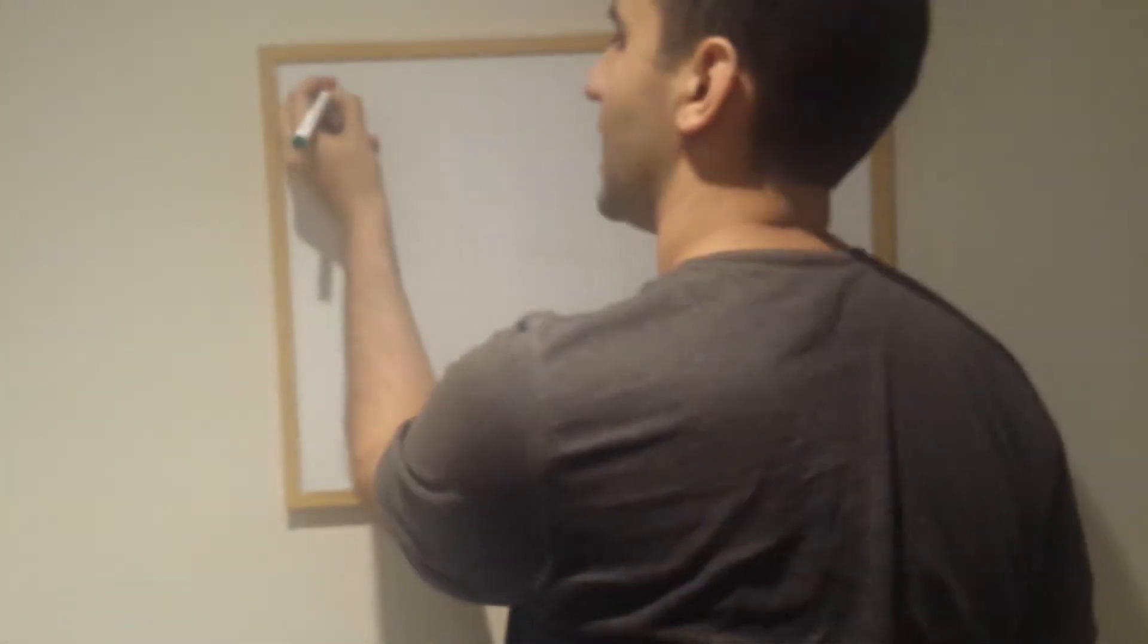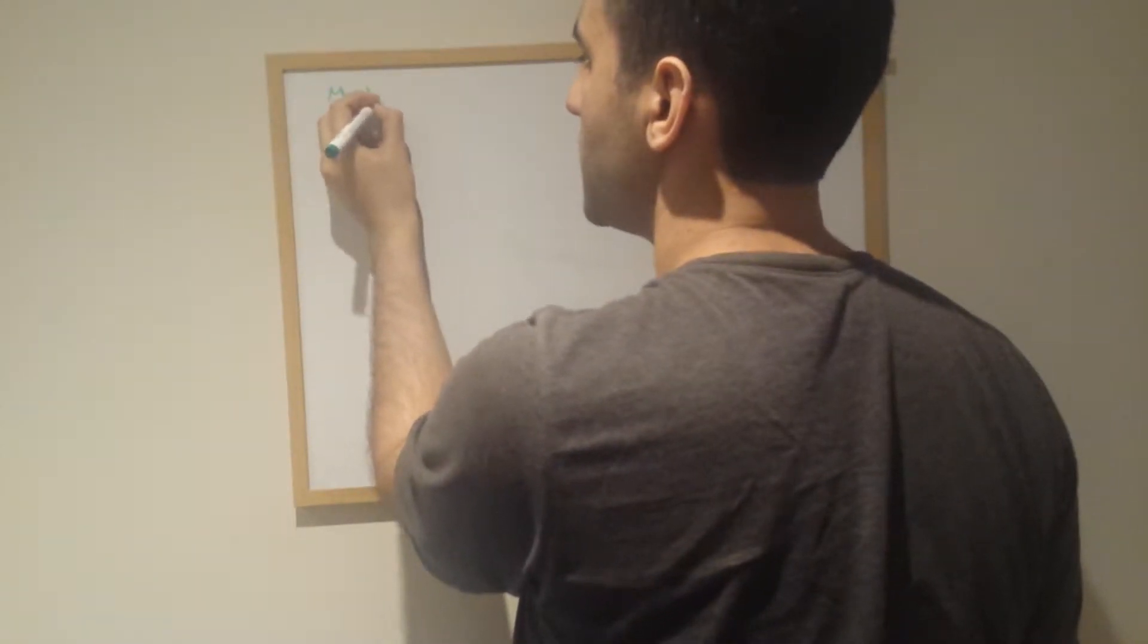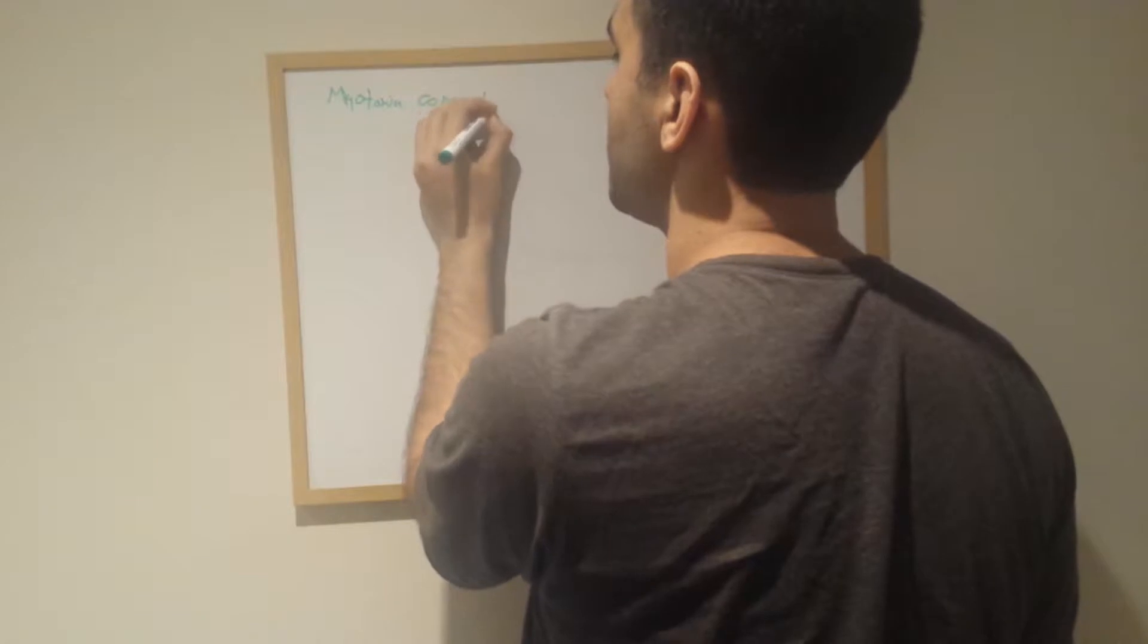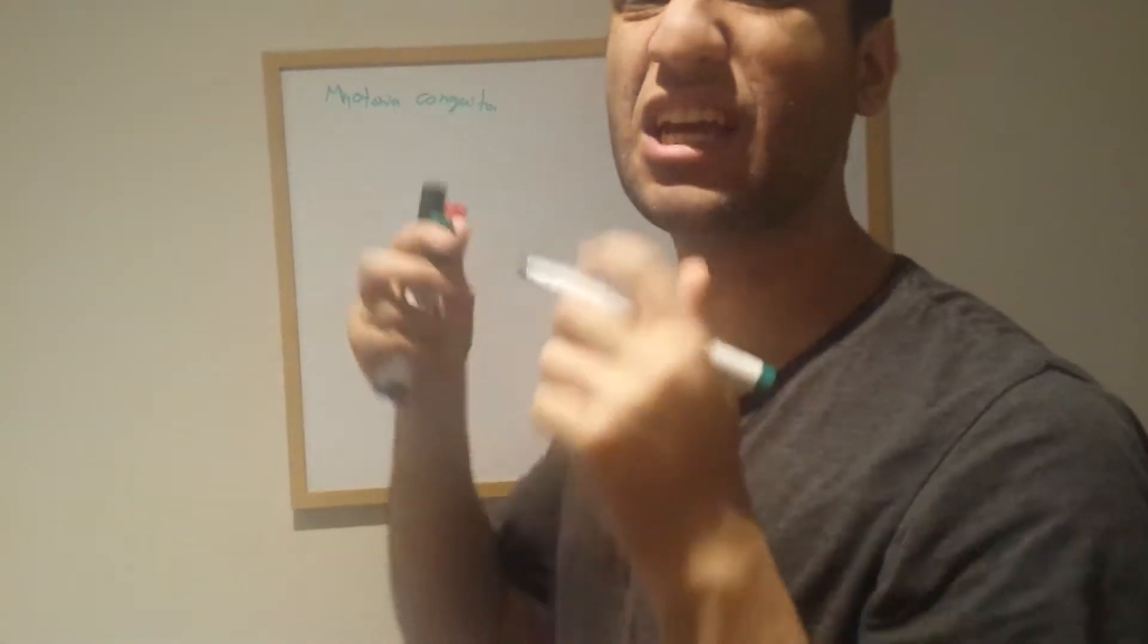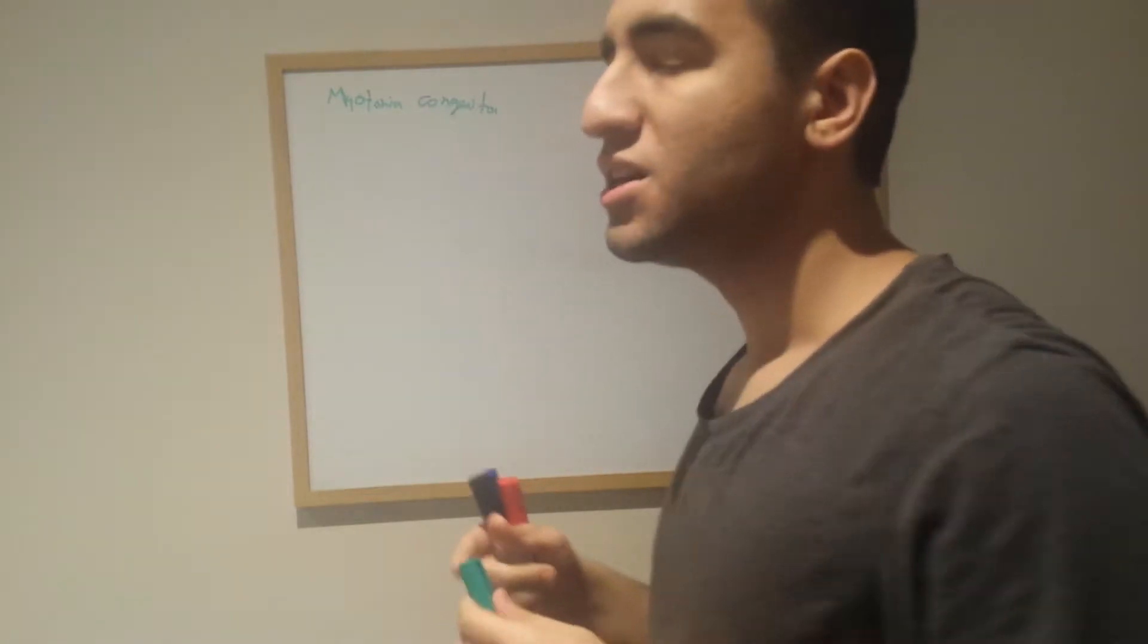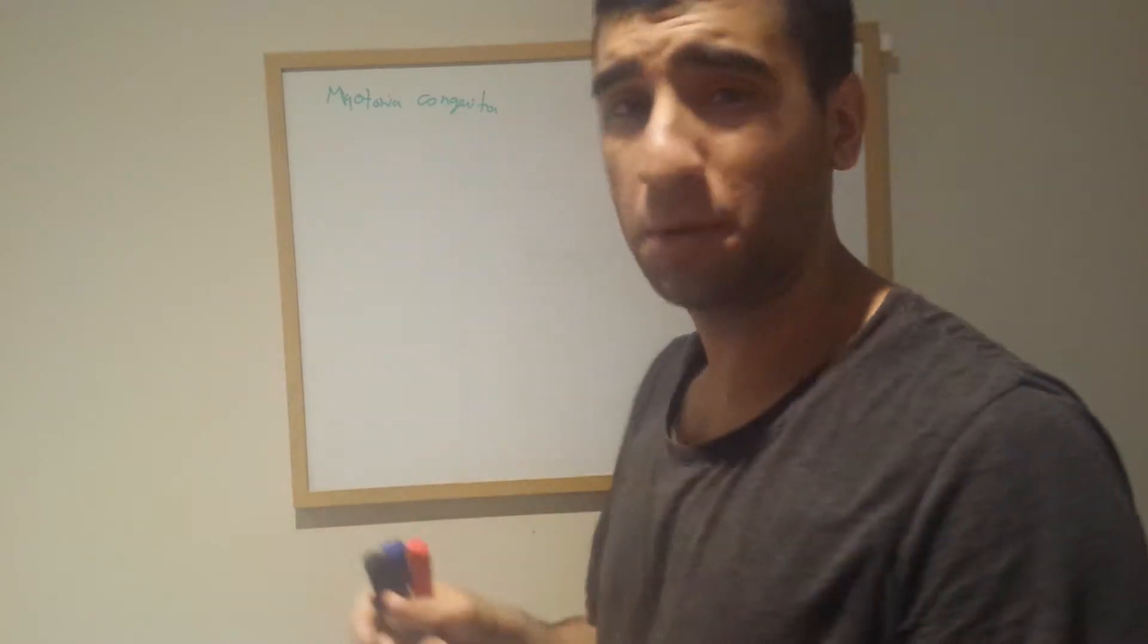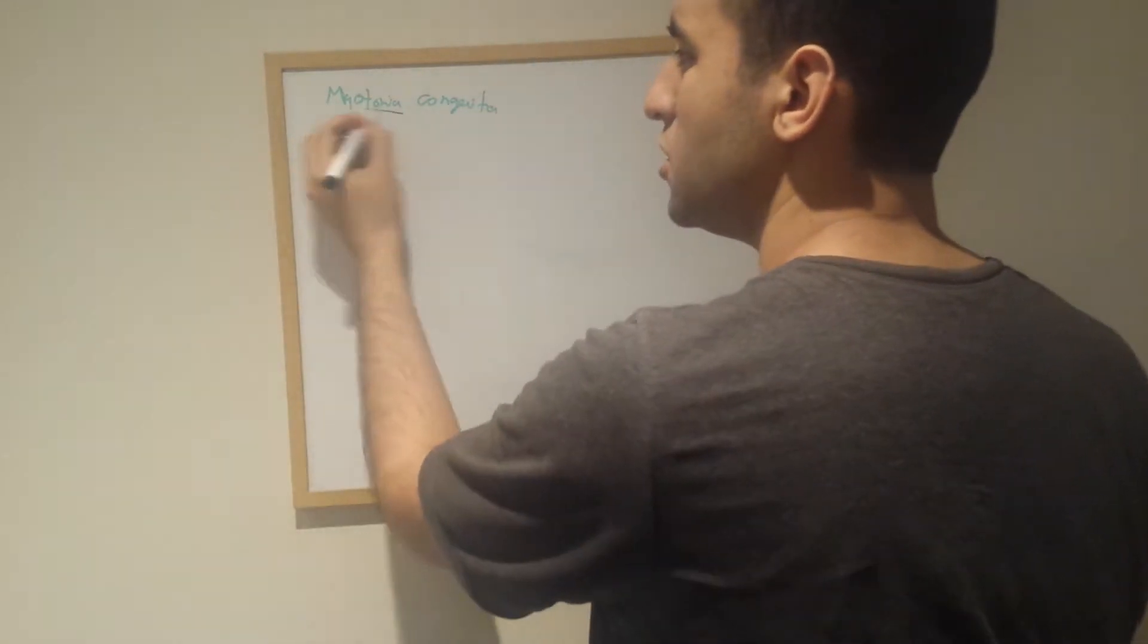In this video I'm going to talk about myotonia congenita, or fainting goat. What it means is that it not only happens in goats, cats, or dogs, it is also common in human beings and that is the reason this is called so.